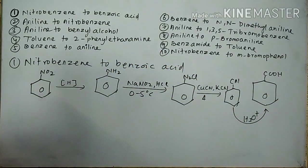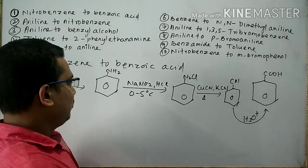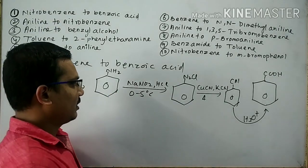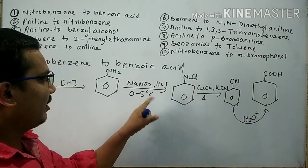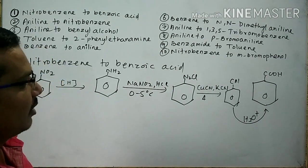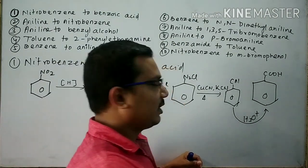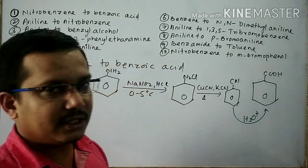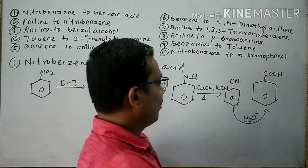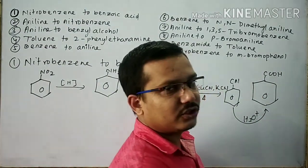To repeat: nitrobenzene undergoes reduction to give aniline. Aniline reacts with NaNO2 in HCl at 0 to 5 degrees centigrade to form BDC. BDC reacts with CuCN dissolved in KCN with heat to form cyanobenzene. Cyanobenzene undergoes acid hydrolysis to give benzoic acid.